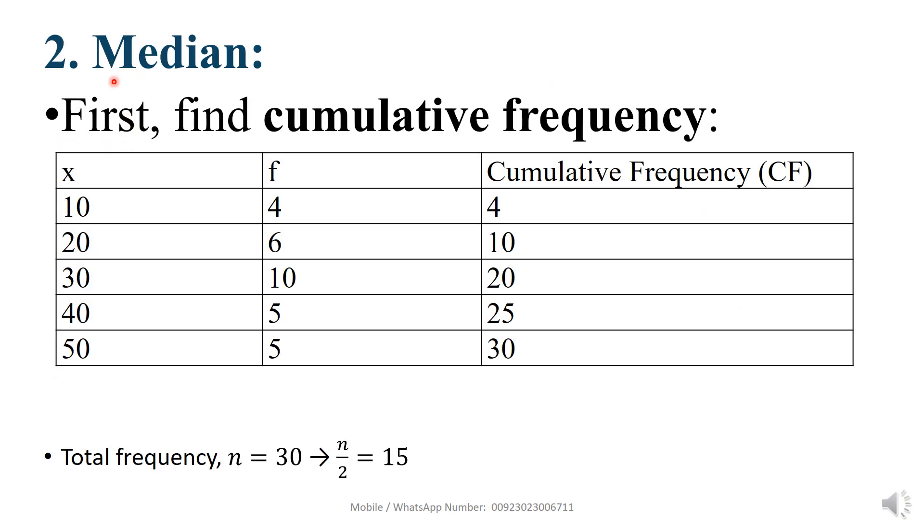Median. First, find cumulative frequency. Now, you can see here, first you write the value of x according to frequency is given. Cumulative frequency. First, we add 4 equal to 4, then 4 plus 6, we get 10, 10 plus 10, we get 20. Then 20 plus 5, we get 25, 25 plus 5, we get 30.